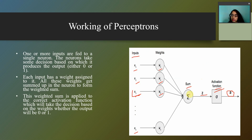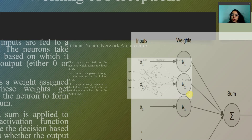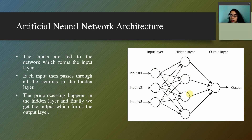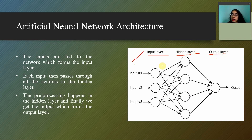Now we will see the architecture of the artificial neural network. The basic architecture consists of one input layer, one hidden layer, and one output layer. The hidden layer can vary based on the complexity of the problem, but for the artificial neural network we are considering only one hidden layer.